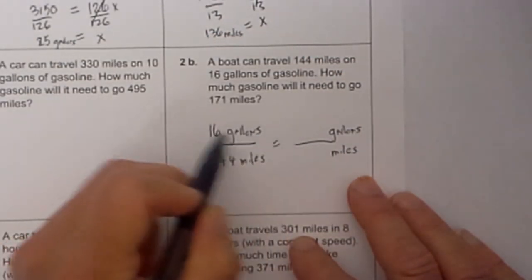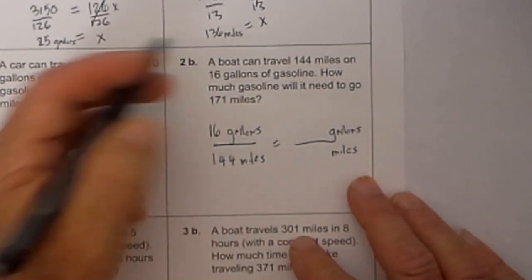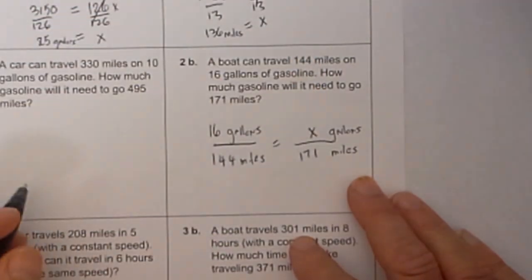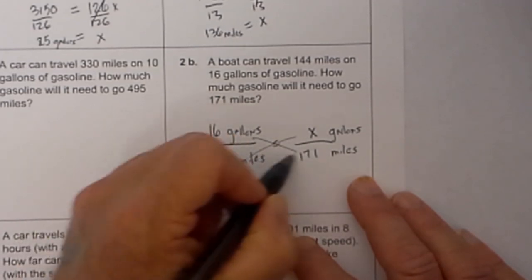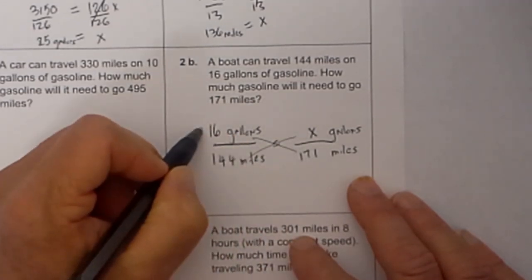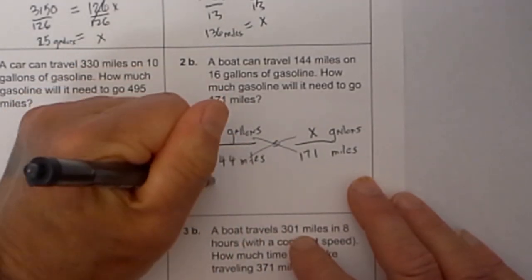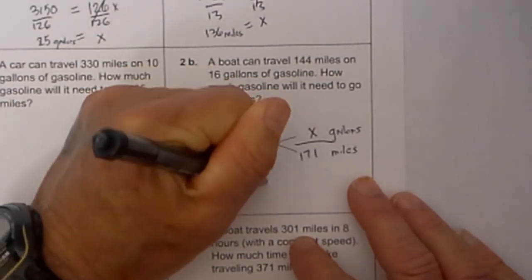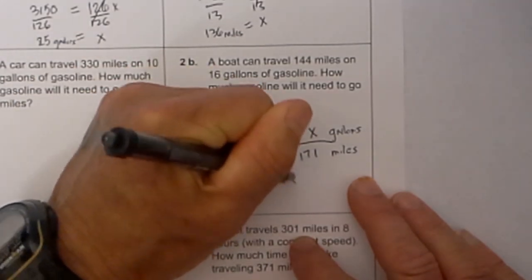What is given? It says it travels 171 miles and we need to know how many gallons that will take. We do a cross product, 171 times 16 is equal to 2736, is equal to 144x.